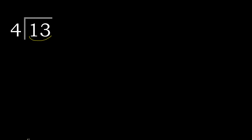Multiply 4 by the number nearest to 13 but not greater. 4 multiplied by 4 is 16, which is greater. Therefore multiply by 3: 4 multiplied by 3 is 12, which is not greater. 13 minus 12 is 1.